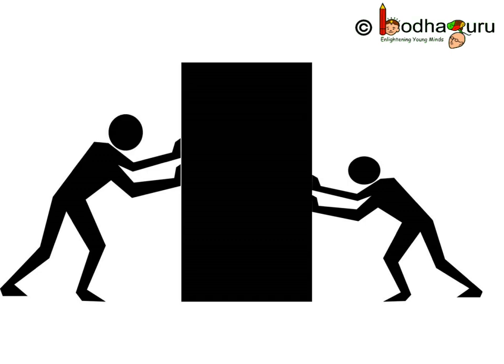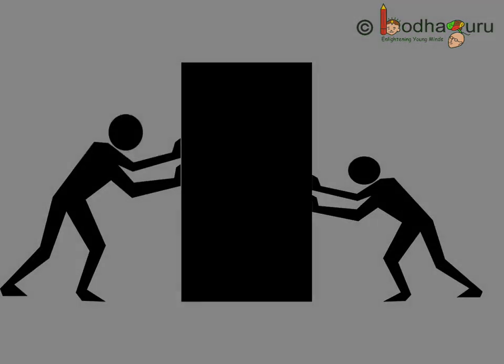Like here, if two men push the box with equal force, the box would not move at all, as the two equal and opposite forces balance out each other. So whenever something moves, changes direction, or changes shape, it is done by unbalanced forces.